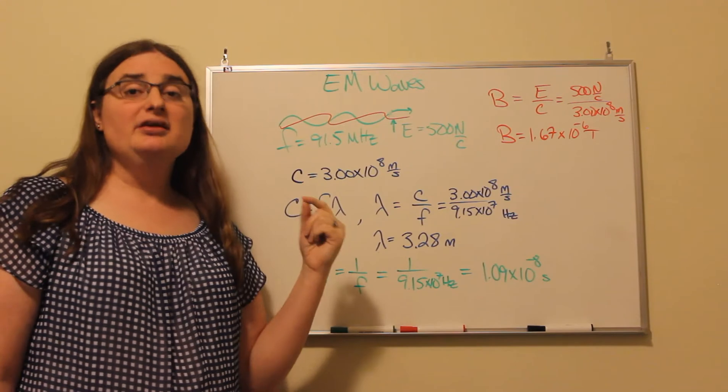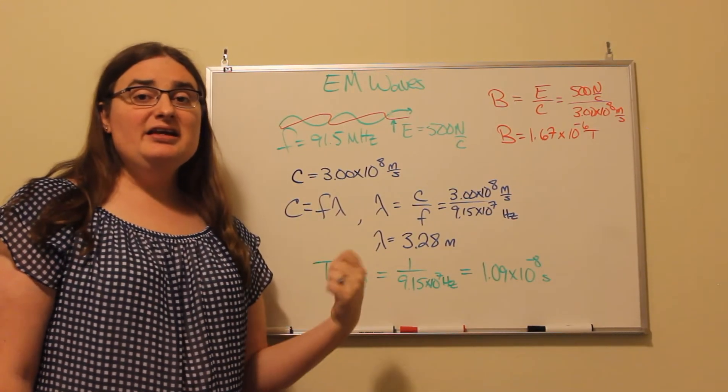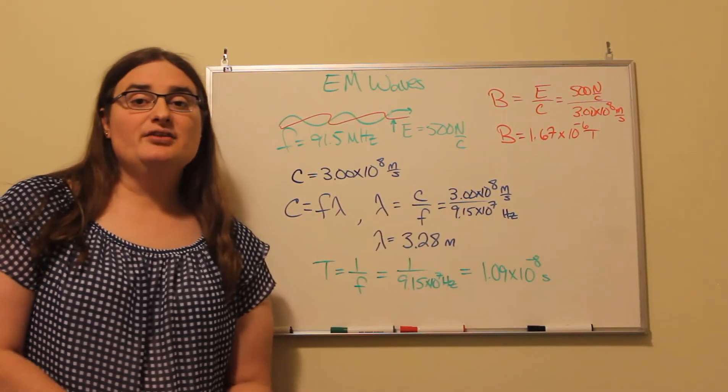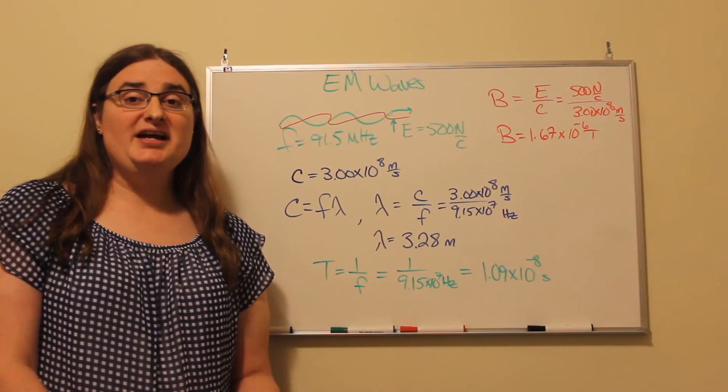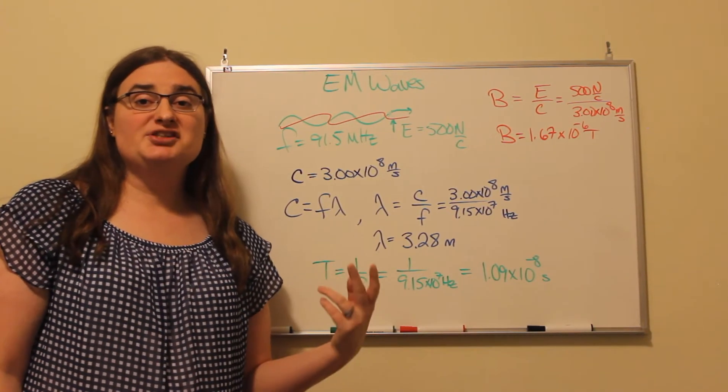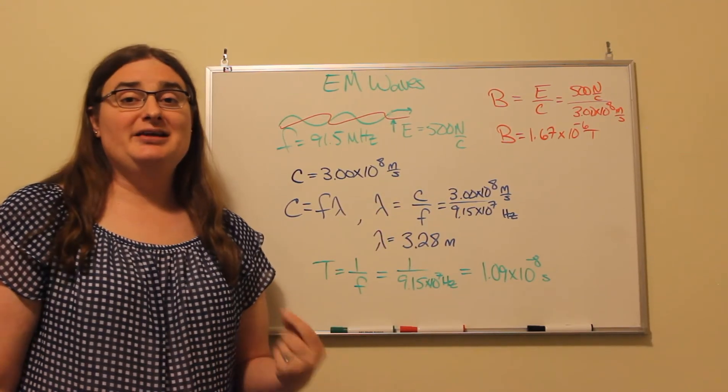And the wavelength is going to be equal to the speed of light divided by the frequency. So if I take 3 times 10 to the 8 meters per second and divide by 9.15 times 10 to the 7 per seconds, that gives me a total length for my wave of 3.28 meters.